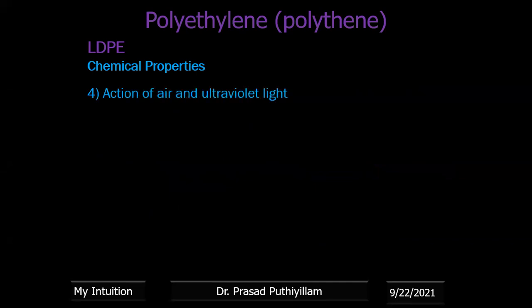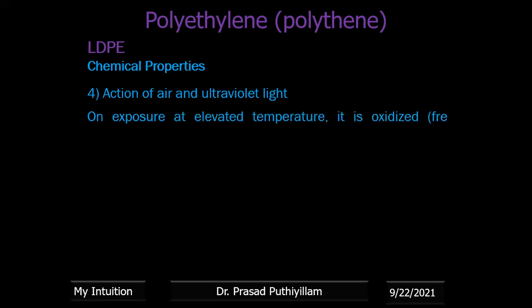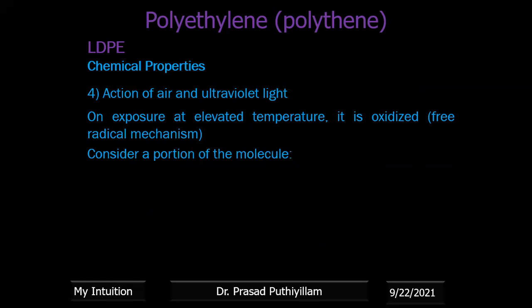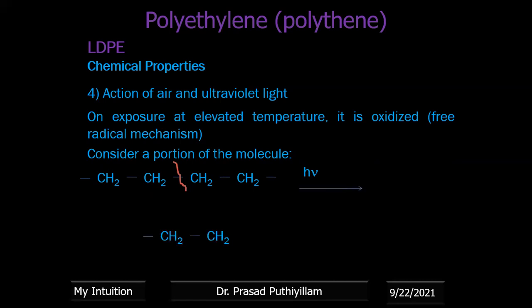Regarding the action of air and ultraviolet light: polyethylene undergoes free radical type degradation. On exposure at elevated temperature and UV light, it oxidizes by a free radical mechanism. Taking a small portion of the polyethylene chain — just the straight chain portion for representation — on exposure to sunlight, homolytic cleavage takes place. The electrons return to their respective carbon atoms, forming a macro free radical at the chain end. This stage is called initiation.